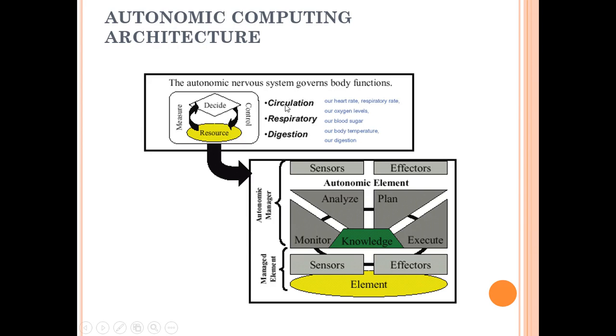Everything is controlled by the autonomic nervous system. You don't have to bother. Have you ever bothered about what is going on when you eat something? Which acid is producing where? When it goes to the small or large intestine? You've never thought because everything is autonomous—it's happening by itself. You have to decide, take the resource, measure while taking resources, and control while deciding.